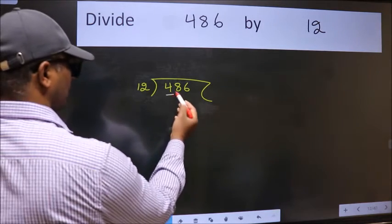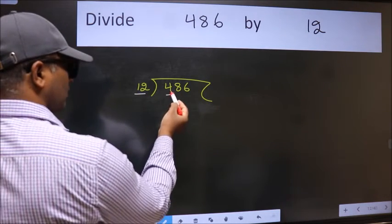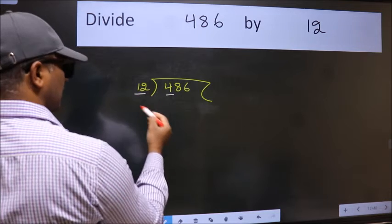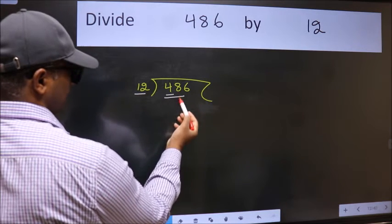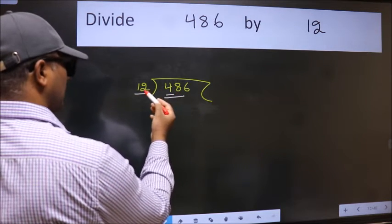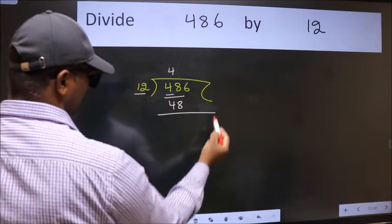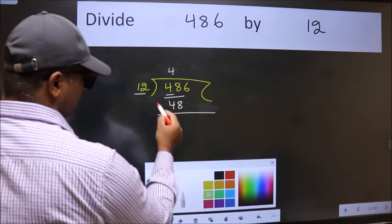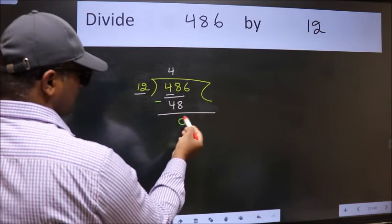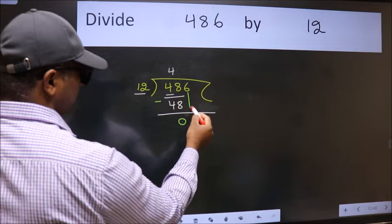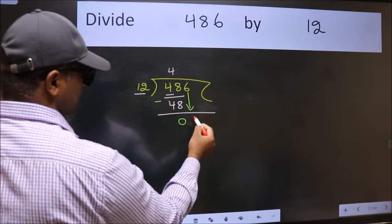Here we have 4 and here 12. 4 is smaller than 12, so take two numbers: 48. When do we get 48 in 12 table? 12 times 4 is 48. Now we should subtract, we get 0. After this bring down the beside number, so 6 down.